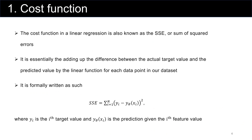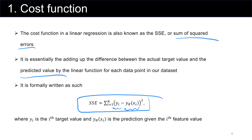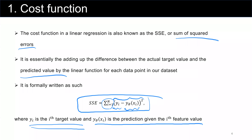The cost function in linear regression is also known as SSE, or sum of squared errors. It adds up the squared differences between the actual target values and the predicted values from the linear function for each data point. Formally, y sub i is the i-th target value and y-theta is the prediction using the i-th feature value.